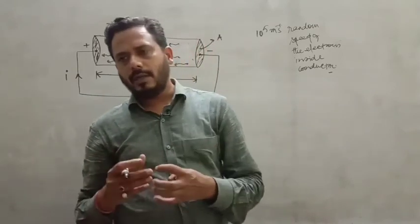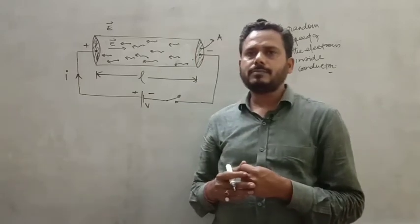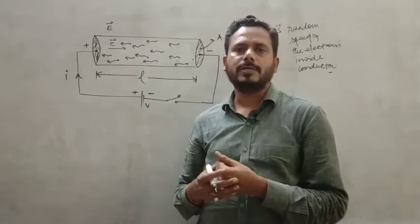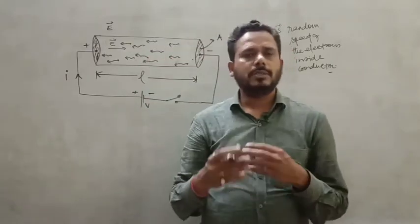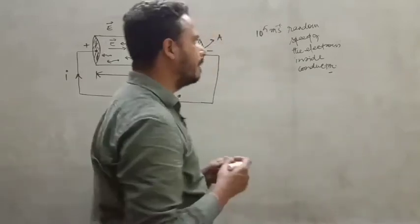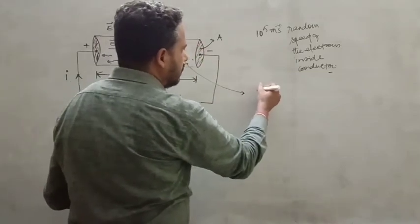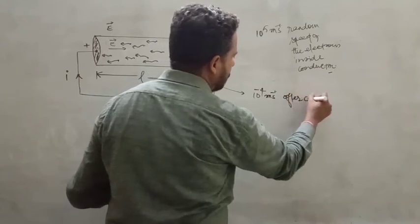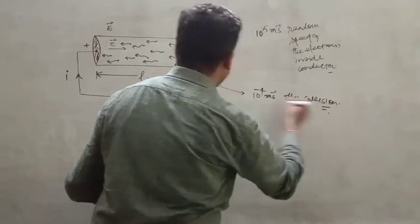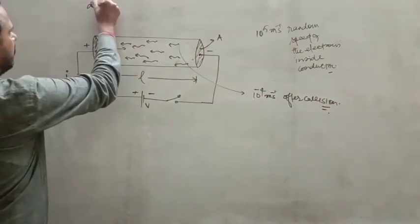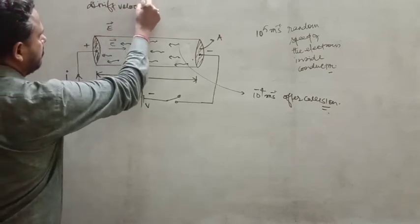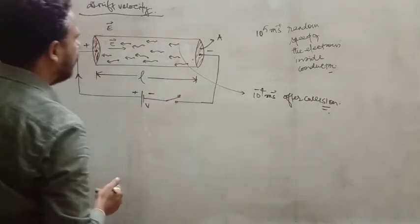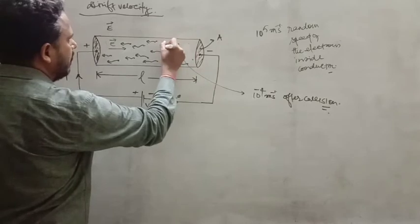Due to these collisions, the speed of the electrons decreases to about 10⁻⁴ meters per second. Since this motion is in one direction, it is called the drift velocity. After collision the speed reaches down to 10⁻⁴ meters per second. From here we can define drift velocity, represented as V_d.